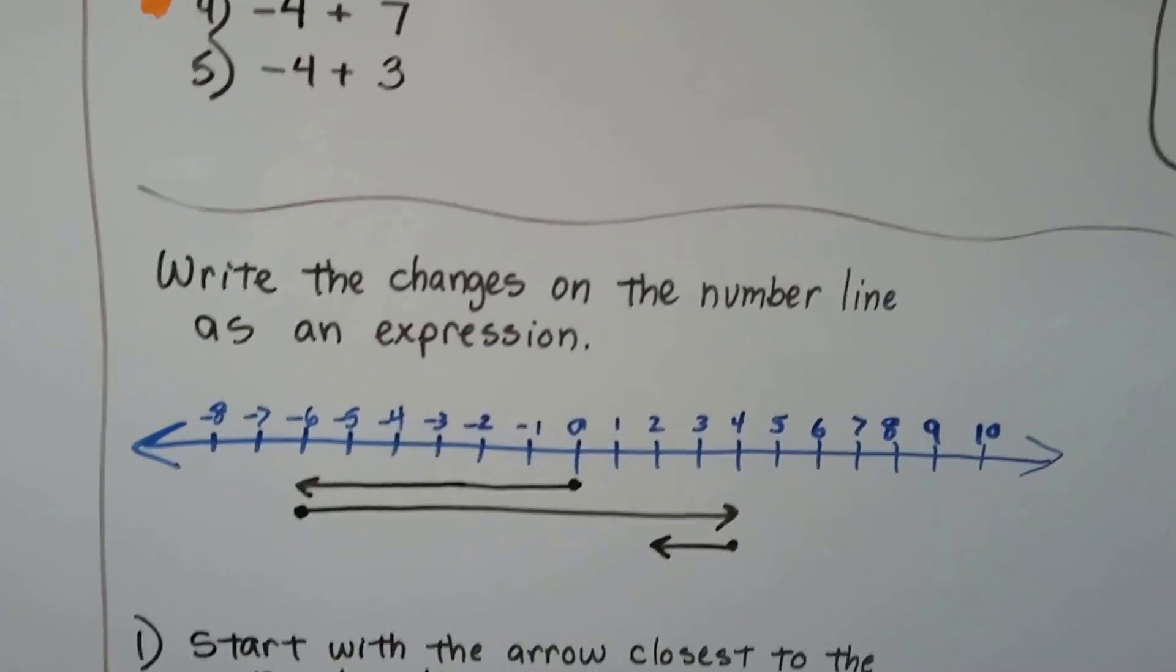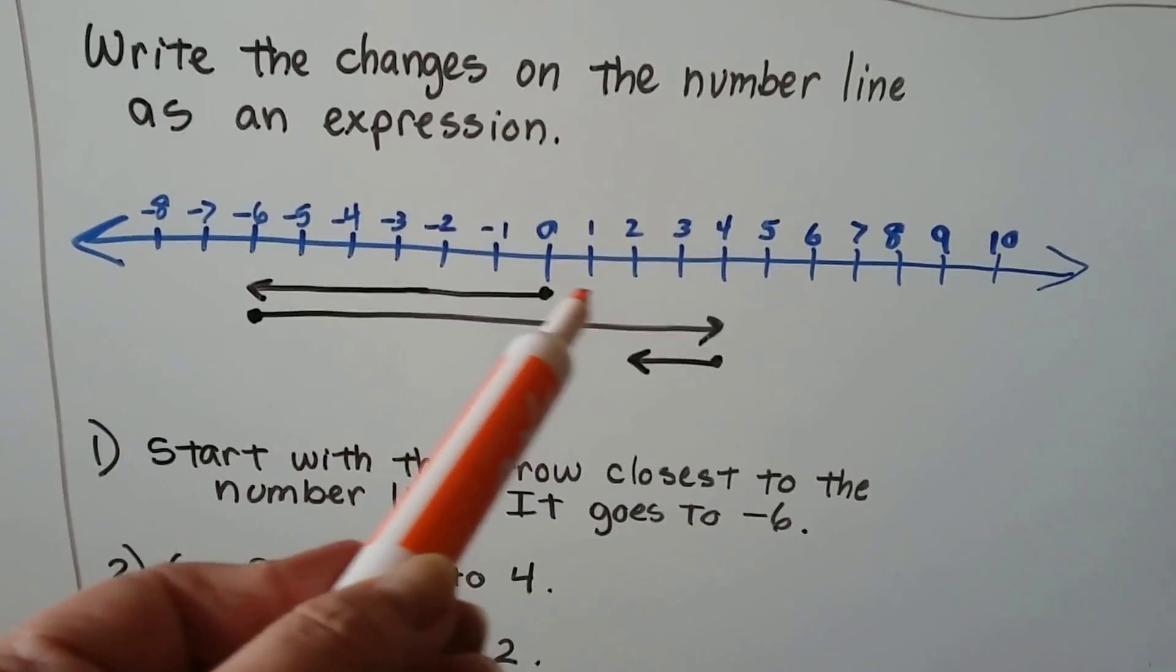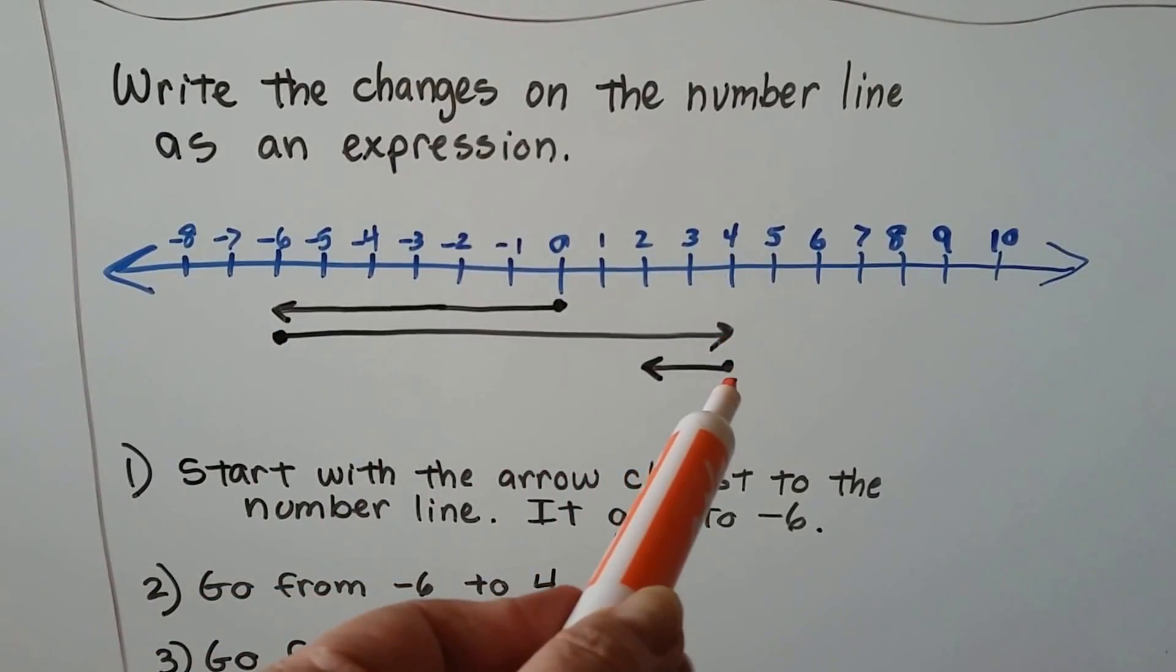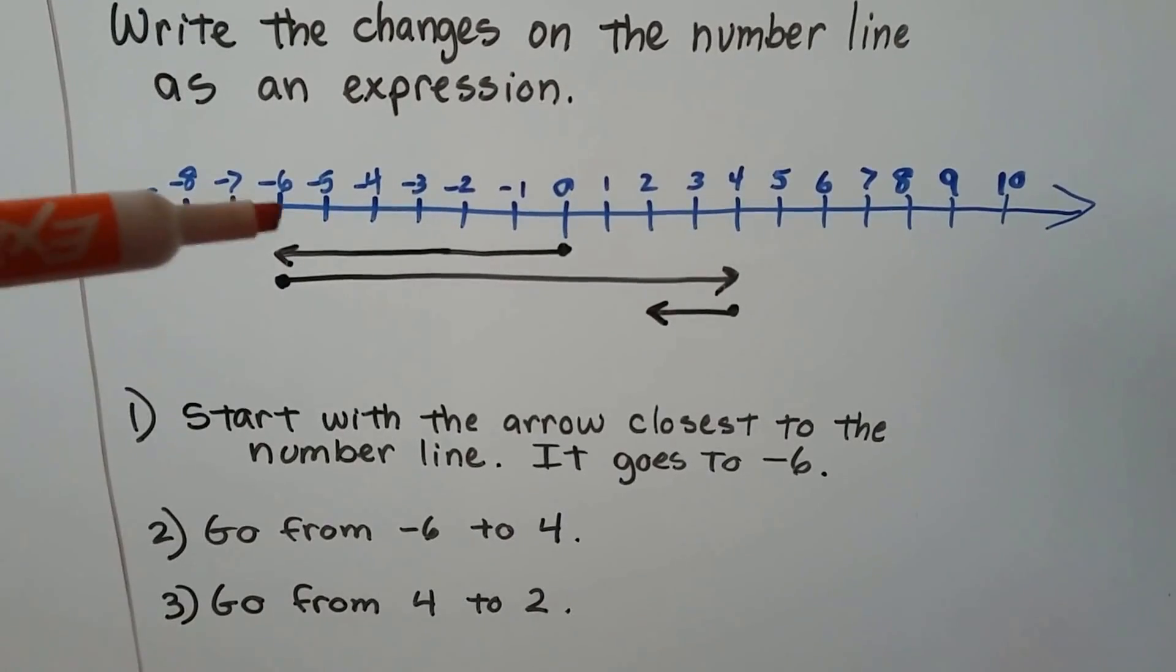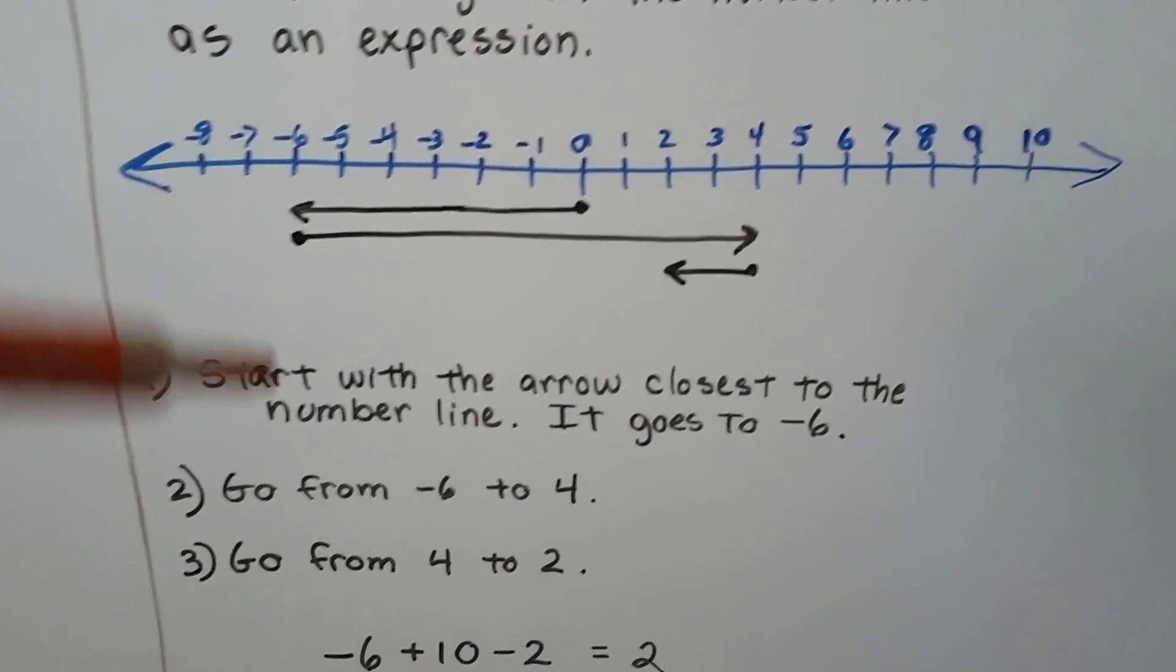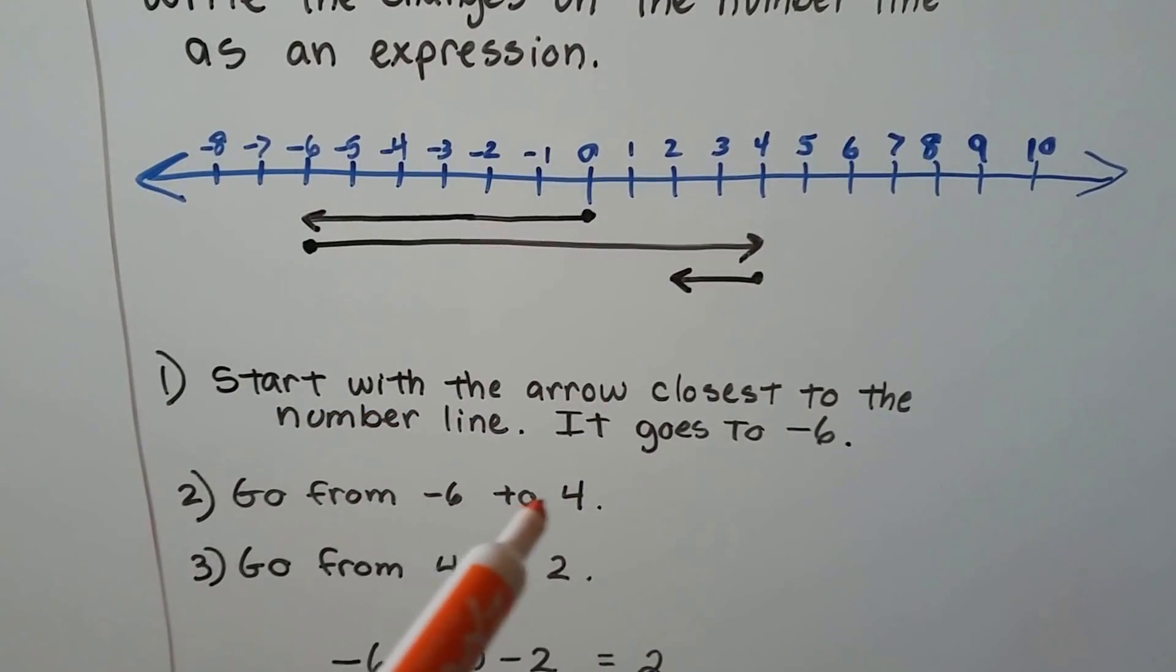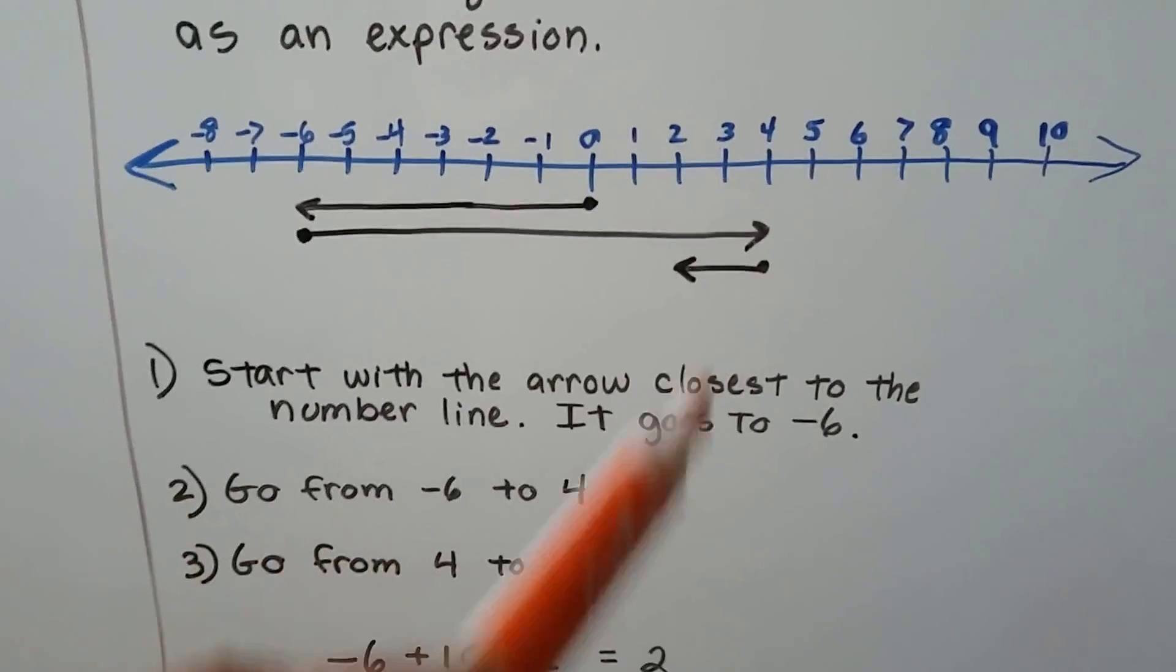Now it says, write the changes on the number line as an expression. So here we've got a ray going from 0 to negative 6, then another one going from negative 6 to positive 4, and then another one going from positive 4 to 2. We start with the one closest to the number line. That's the 0 to negative 6. So it goes to negative 6. Then it goes from negative 6 to positive 4. Then it goes from positive 4 to 2. So that's how we're going to write the expression.